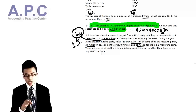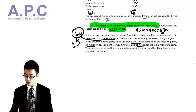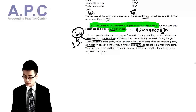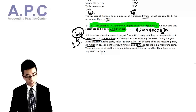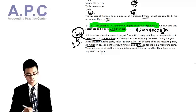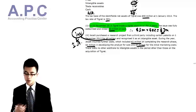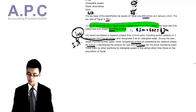There were no other additions to intangible assets in the period other than those from the acquisition of Tigrex, which has already been accounted for.